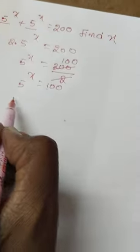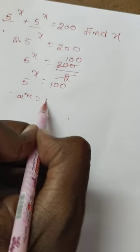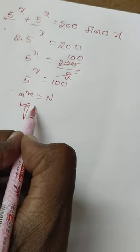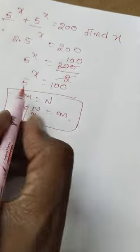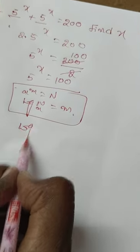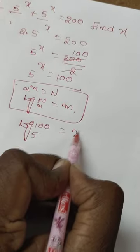So take logarithm. If a power m is equal to n, then log n to base a is equal to m. Use this formula: log 100 to base 5 is equal to x.